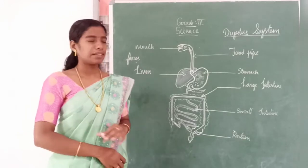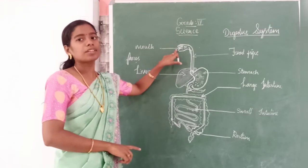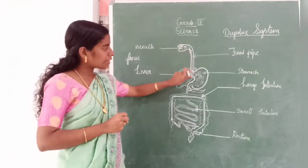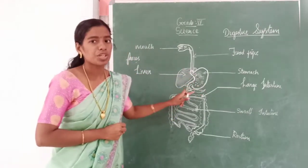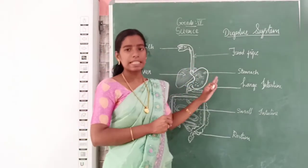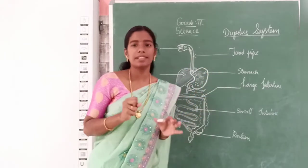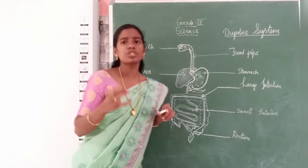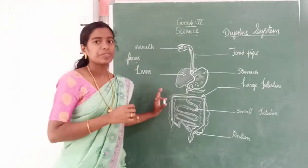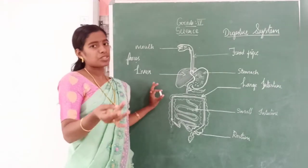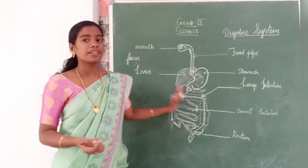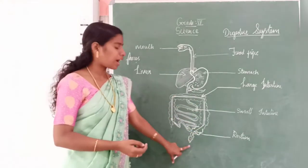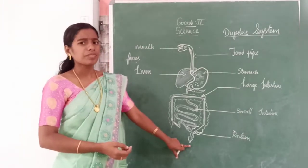Once again I will repeat: the mouth is the first organ, where the teeth chew the food. Then it enters into the food pipe, and from the food pipe it enters into a sack-like structure called the stomach. From the stomach, using the digestive juices secreted from the stomach wall, the food is ground down and passed into the small intestine. When the food passes through the small intestine, all the useful materials — protein, calcium, vitamins, minerals — are absorbed by the blood. Then the remaining undigested food enters into the large intestine and is given out through the rectum as feces.